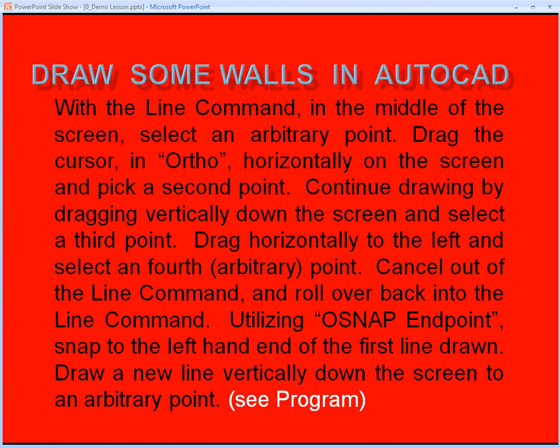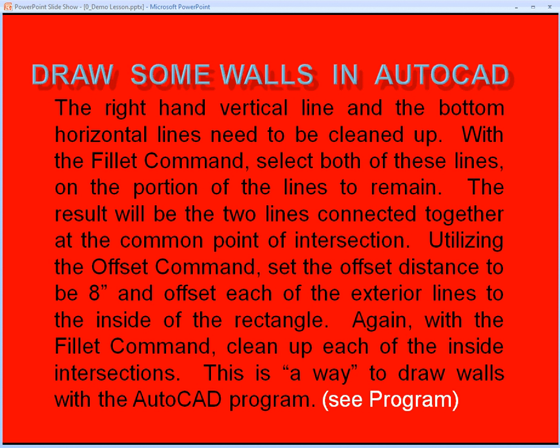With the line command in the middle of the screen, select an arbitrary point. Drag the cursor in ortho horizontally on the screen and pick a second point. Continue drawing by dragging vertically down the screen and select a third point. Drag horizontally to the left and select a fourth arbitrary point. Cancel out of the line command and roll over back into the line command, utilizing OSNAP endpoint, snap to the left-hand end of the first line drawn. Draw a new line vertically down the screen to an arbitrary point. The right-hand vertical line and the bottom horizontal line need to be cleaned up.